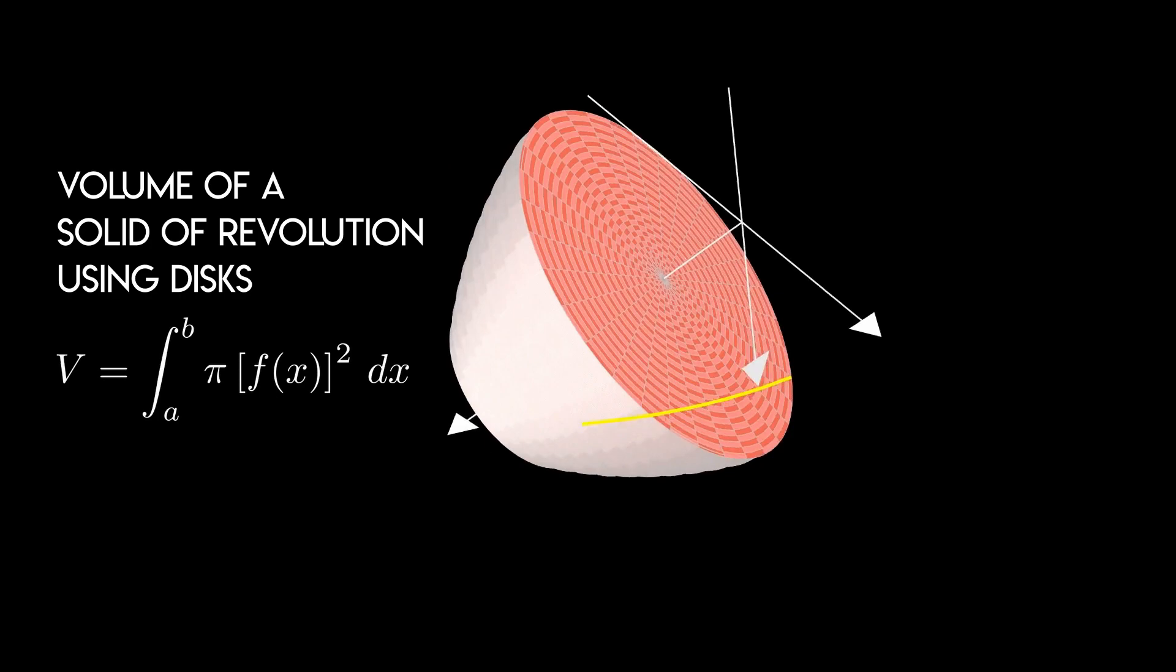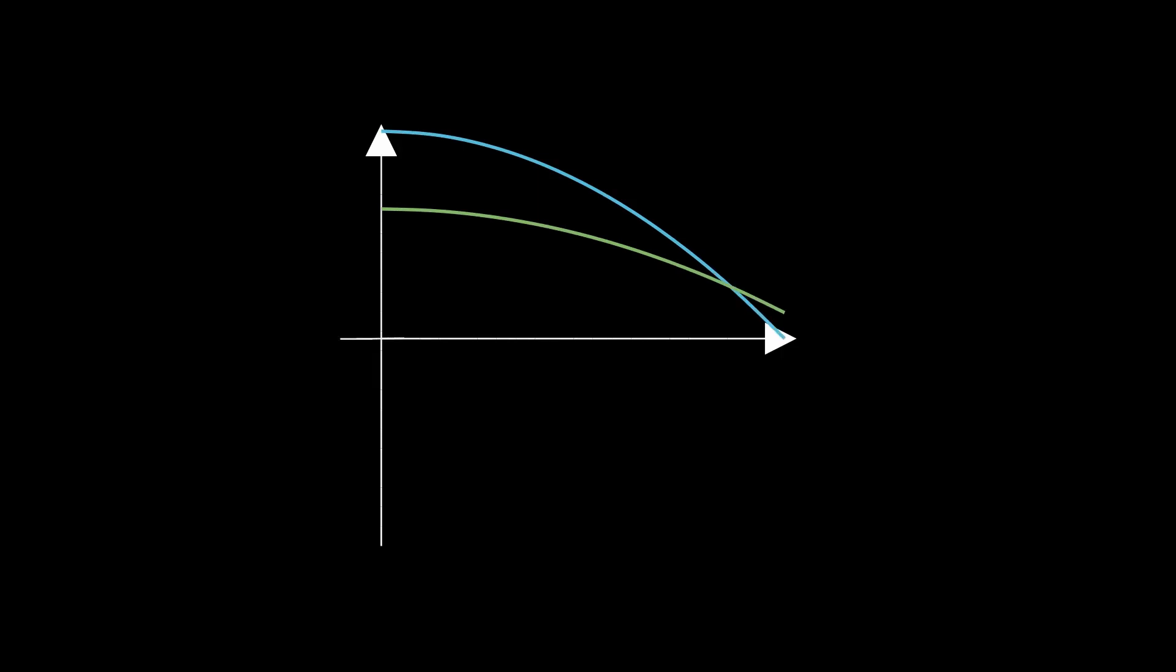Which will lead us to our final formula for the volume of a solid of revolution using disks, given by the definite integral of pi times the function squared, evaluated from a to b. It is also possible for the area between two curves to be the generating region of a solid of revolution.